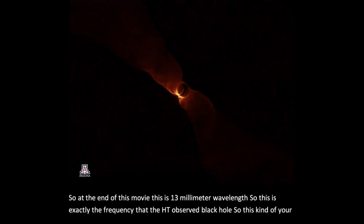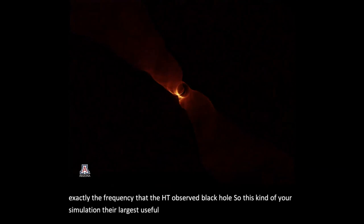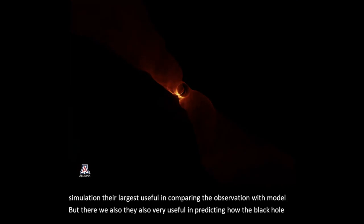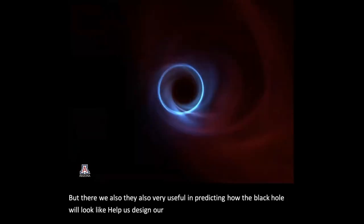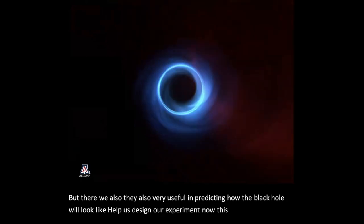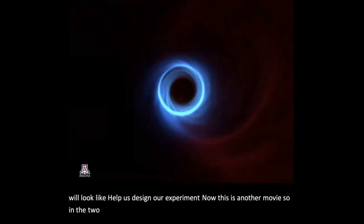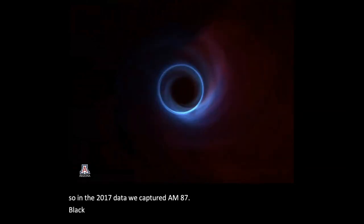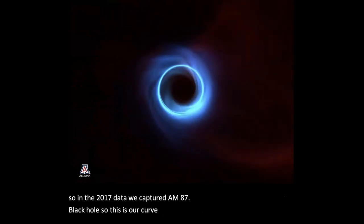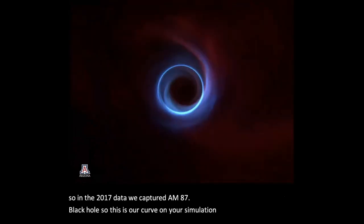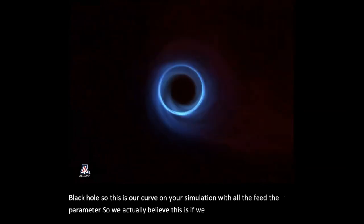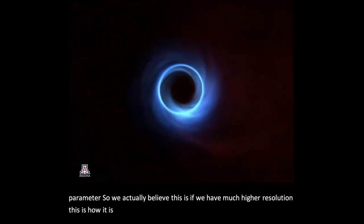So this kind of simulation, they're not just useful in comparing the observation with model, but they're also very useful in predicting how the black hole will look like and help us design our experiment. Now, this is another movie. So in the 2017 data, we captured the M87 black hole. So this is our current simulation with all the fitted parameters. So we actually believe this is, if we have much higher resolution, this is how M87 would look like.